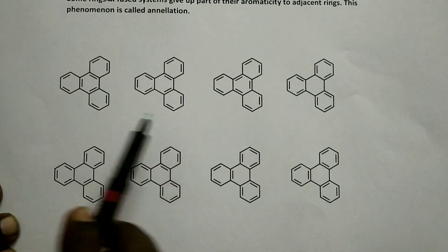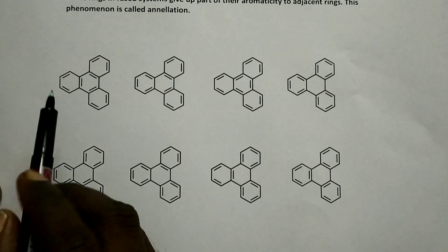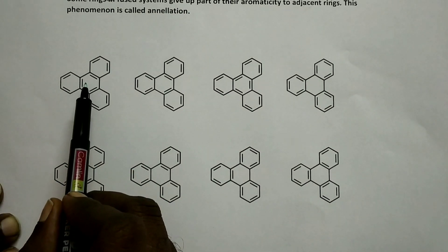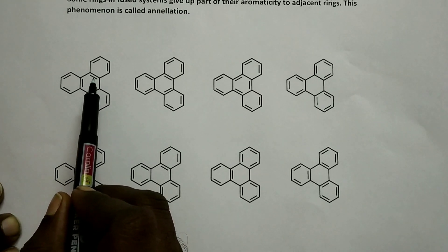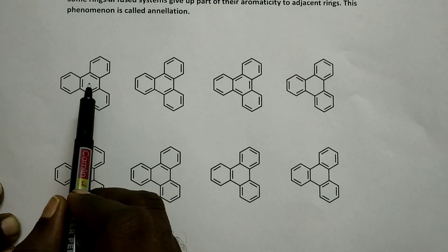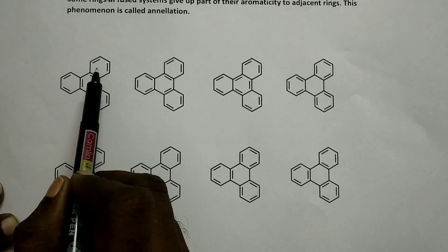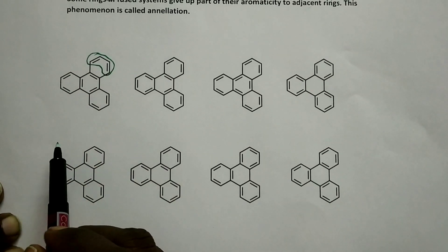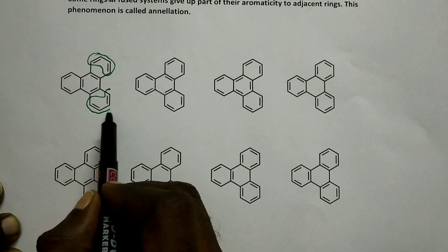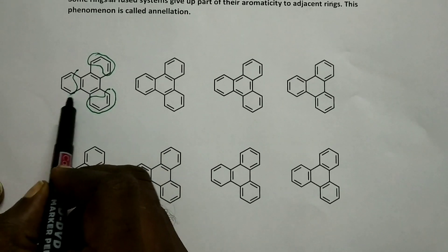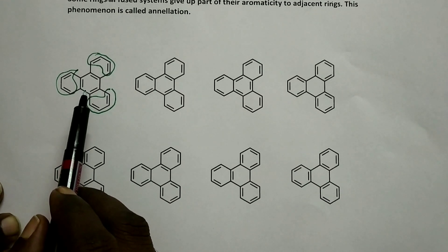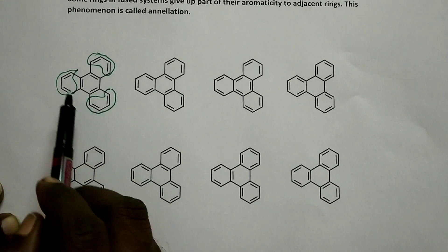Carefully look at these resonance structures. Look at the middle one — how many pi bonds? Three pi bonds, that means six pi electrons, a sextet of pi electrons. It is exactly the benzene ring. But look at this one — only two pi bonds. So this is more like butadiene. Only the middle ring is a benzene ring with a sextet of electrons; the others are butadiene.